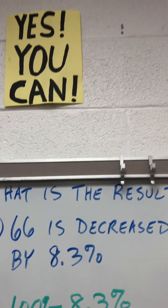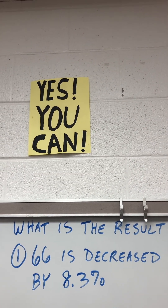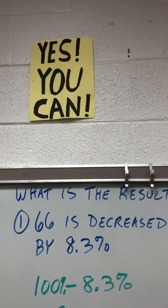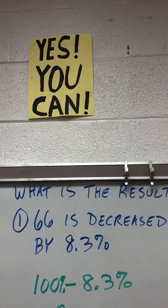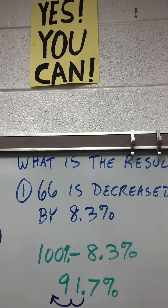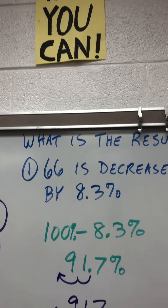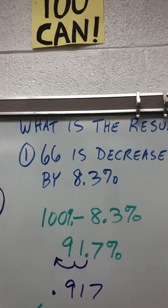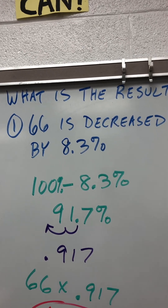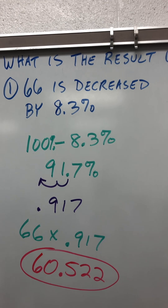For example, 66 is decreased by 8.3%. What you're going to do is take 100% and minus 8.3%. That gives you 91.7%. Move the decimal two places, that gives you 0.917. So take 66 times 0.917 and that'll give you 60.522.